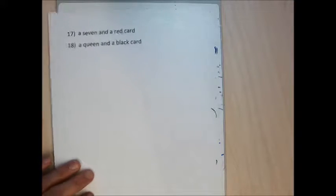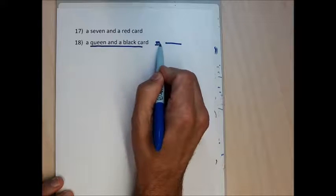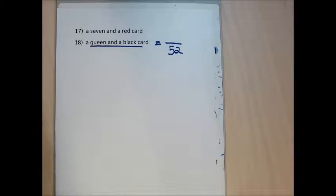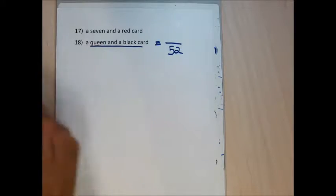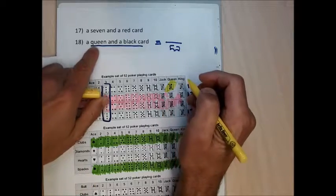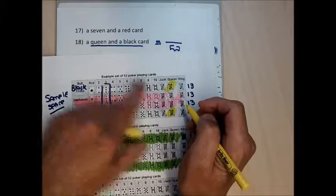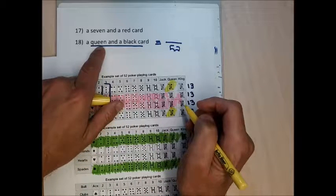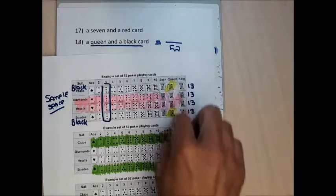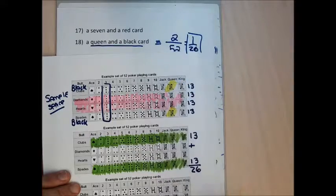For problem 18, the probability of getting a card that's both a queen and black: denominator is 52. The cards that are both queens and black are the queen of clubs and the queen of spades — 2 cards. The probability is 2/52, which reduces to 1/26. For problem 17, you should also get 1/26.